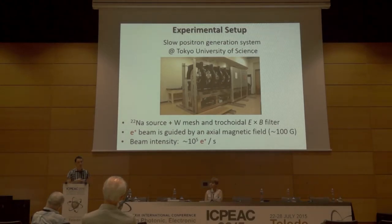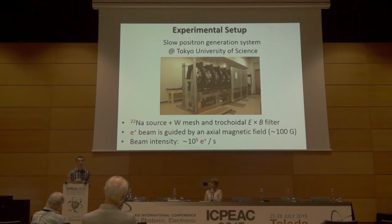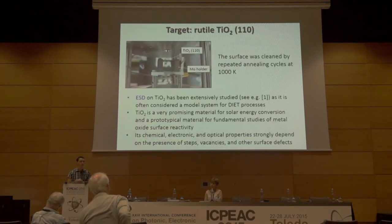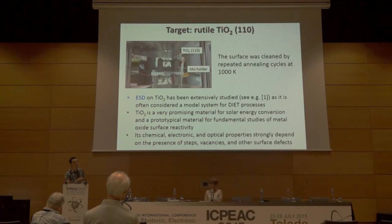Briefly, I'll present our experimental setup. We have a slow positron generation system at Tokyo University of Science. We produce a slow positron beam using a sodium-22 source and a tungsten mesh in conjunction with a trocoid energy filter. The positron beam is guided by a magnetic field of about 100 gauss, and the beam intensity we obtain is about 10^5 positrons per second. The target is the rutile TiO2 surface, held by a molybdenum holder, and the surface was cleaned by repeated annealing at 1,000 Kelvin.